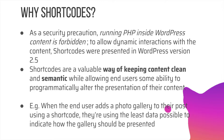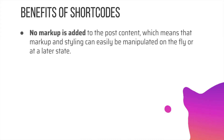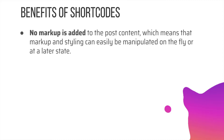For example, when the end user adds a photo gallery to their post using a shortcode, they're using the least data possible to indicate how the gallery should be presented. There are default shortcodes available and you can create your own as well, which we'll discuss in a moment. One of the benefits of shortcodes is that no markup is added, which means the markup and styling can easily be manipulated on the fly or at a later stage. Shortcodes can also accept parameters, allowing users to modify how the shortcode behaves.